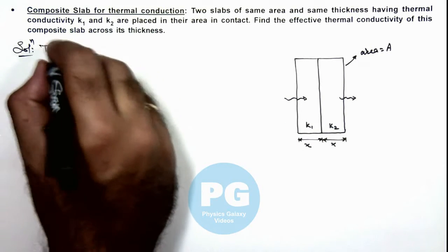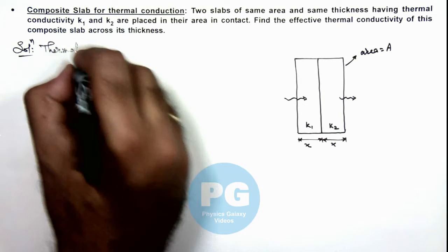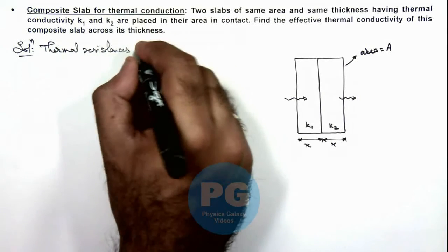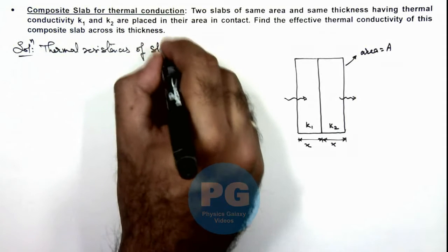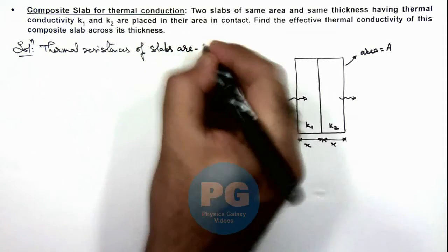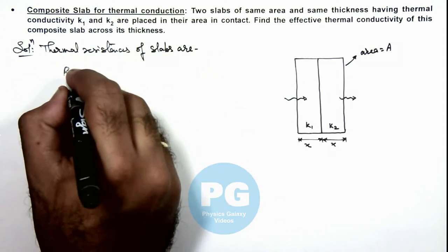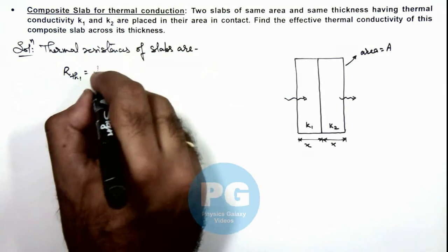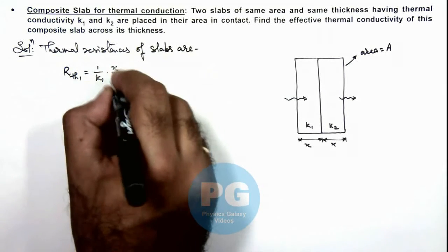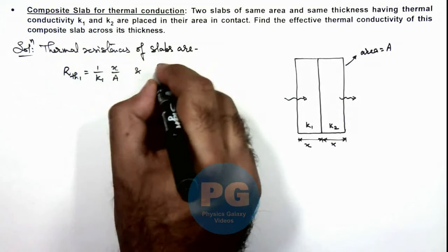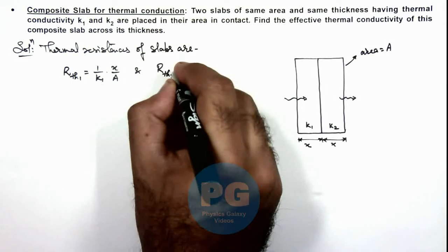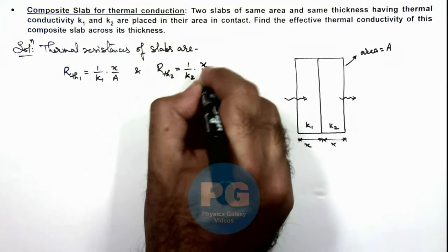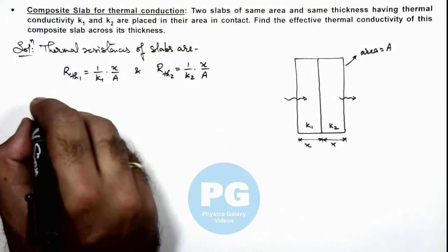So first we can calculate the thermal resistances of slabs. Here we can write thermal resistance for the first slab as 1 by k2 multiplied by x by A, and the thermal resistance for the second slab we can write as 1 by k2 multiplied by x by A.